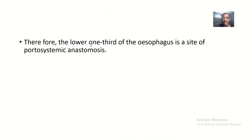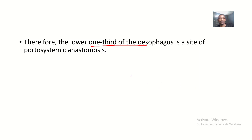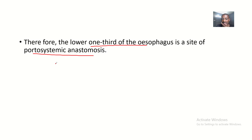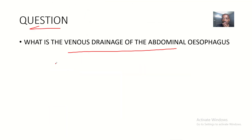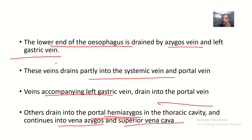The lower one-third of the esophagus is a site of portosystemic anastomosis. There's already a separate video on portosystemic anastomosis — comment and I'll drop the link. The left gastric vein represents the portal system side, and the hemi-azygous vein represents the systemic side. That's the venous drainage of the abdominal esophagus. See you in the next tutorial!